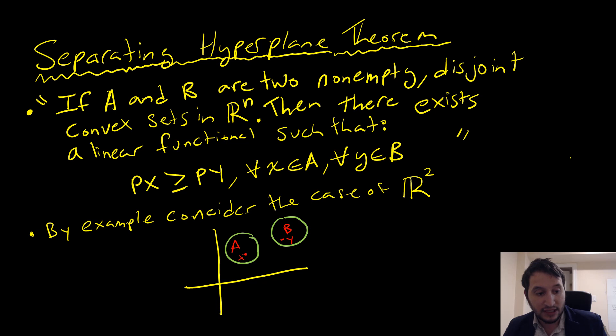So we have this P here, which is our functional. By example, we're going to consider this case where we have two convex sets,